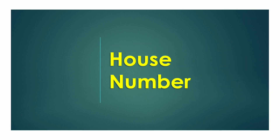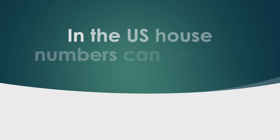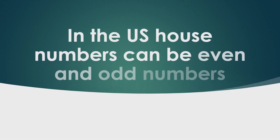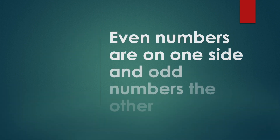House numbers. In the US, house numbers can be even and odd numbers. Even numbers are on one side and odd numbers on the other.